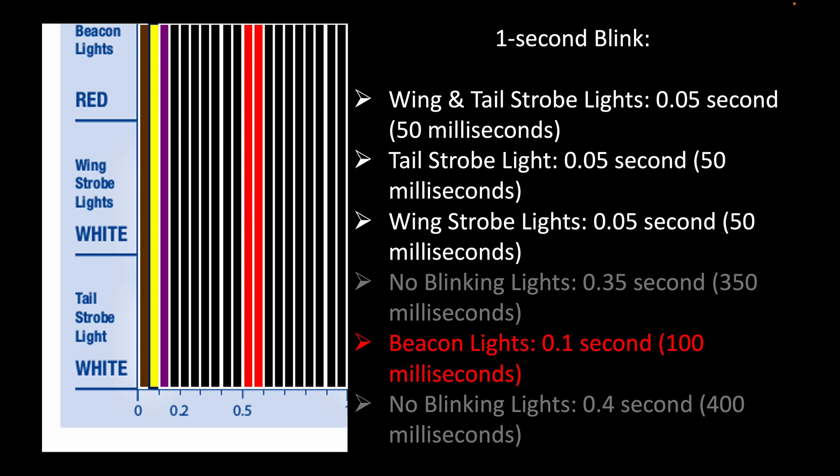Here's what a 1 second blink looks like on an Airbus 320 plane. For the first 50 milliseconds, the wing and tail strobe lights are turned on simultaneously.